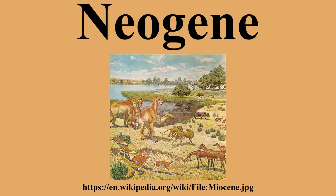The Neogene is a geologic period and system in the International Commission on Stratigraphy Geologic Timescale, starting 23.03 million years ago and ending 2.58 million years ago. The second period in the Cenozoic era, it follows the Paleogene period and is succeeded by the Quaternary period. The Neogene is subdivided into two epochs, the earlier Miocene and the later Pliocene, officially covering about 20 million years, making it the shortest period of the Phanerozoic eon.